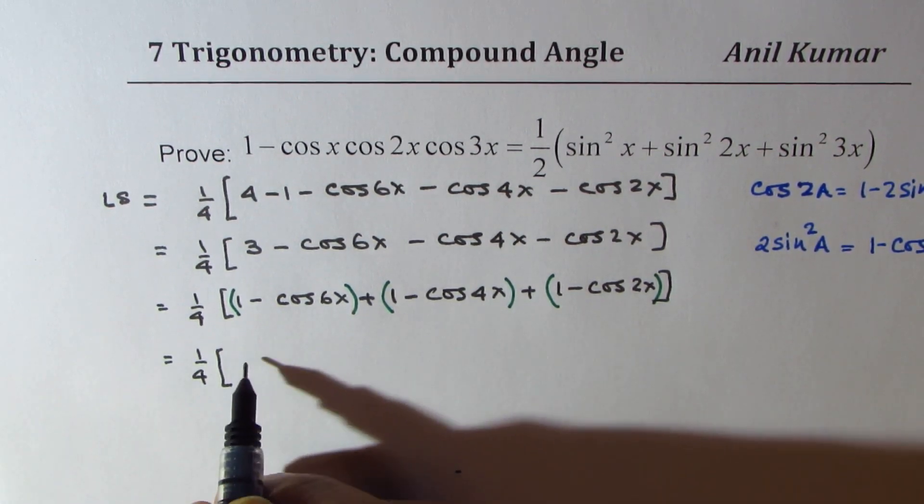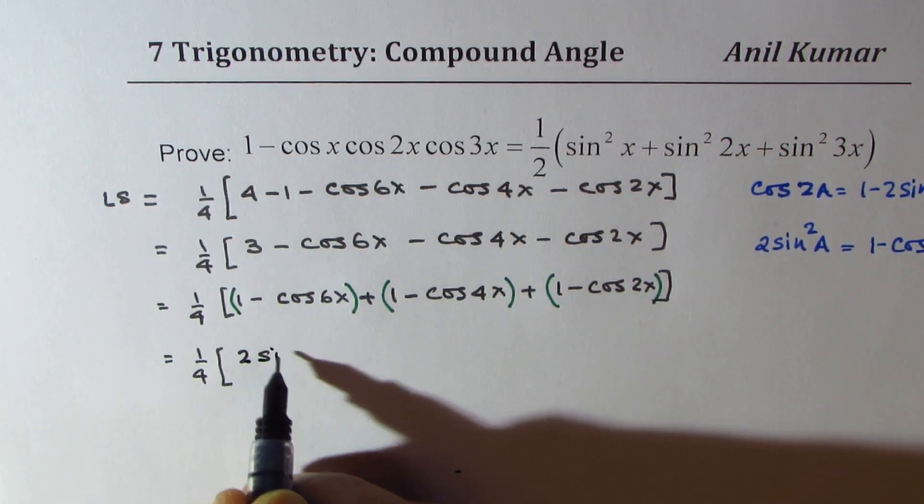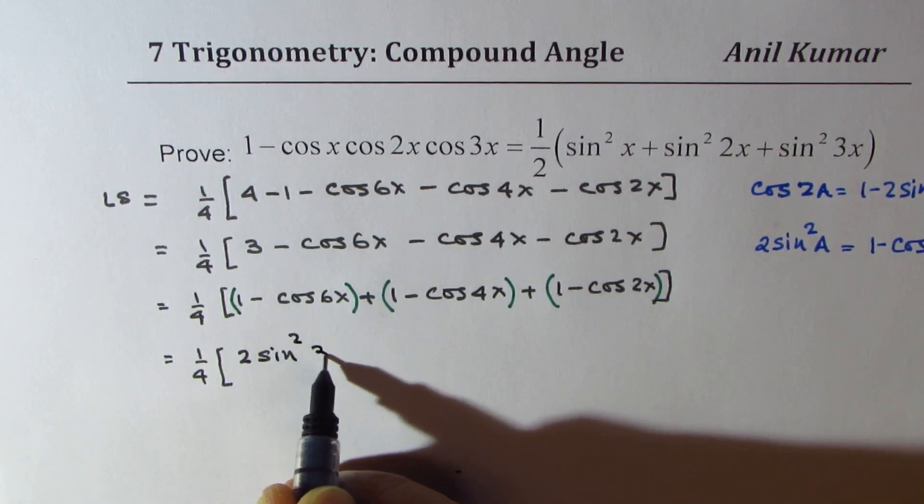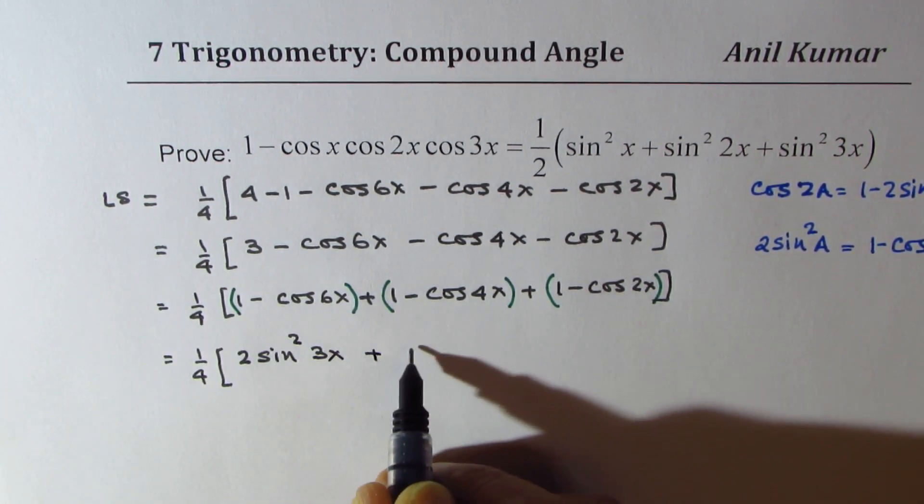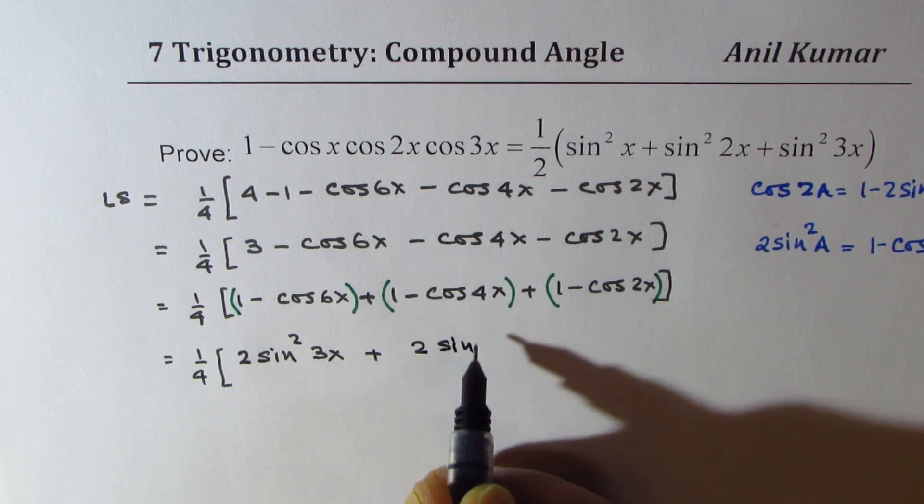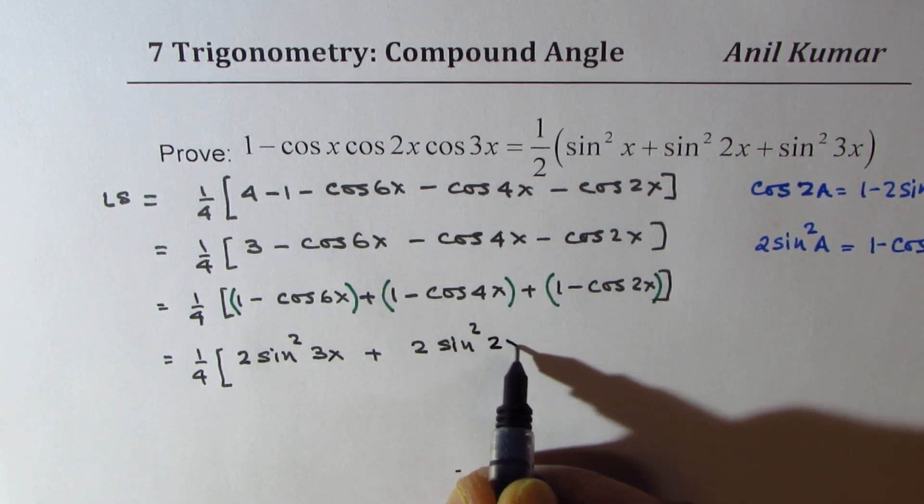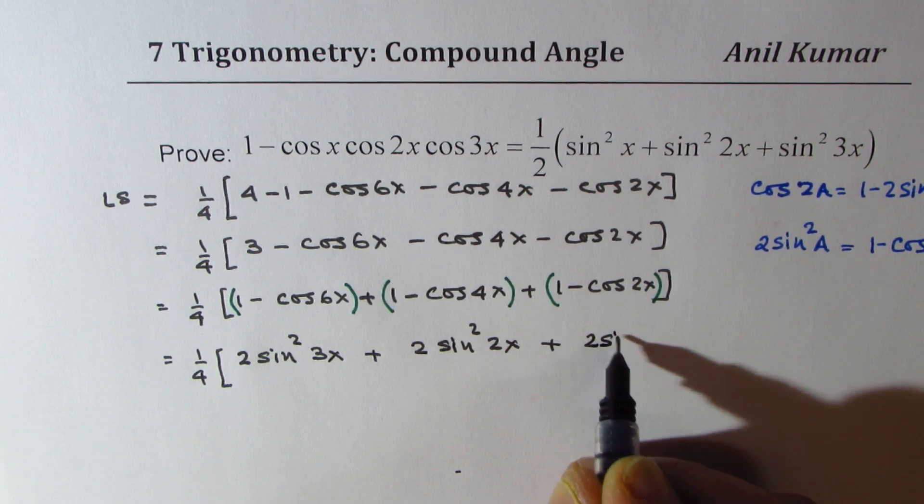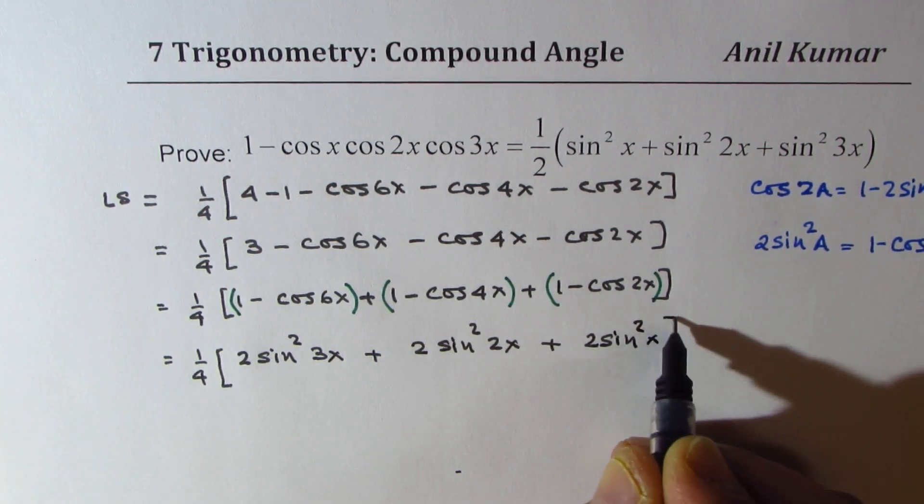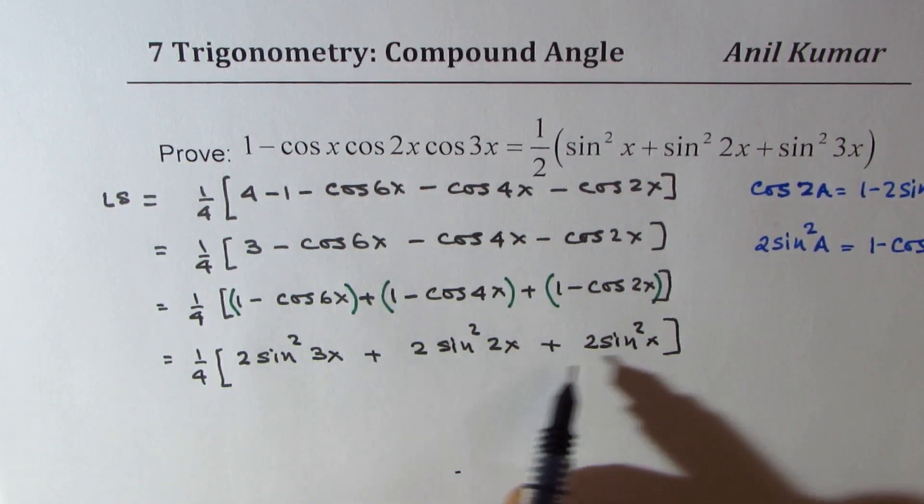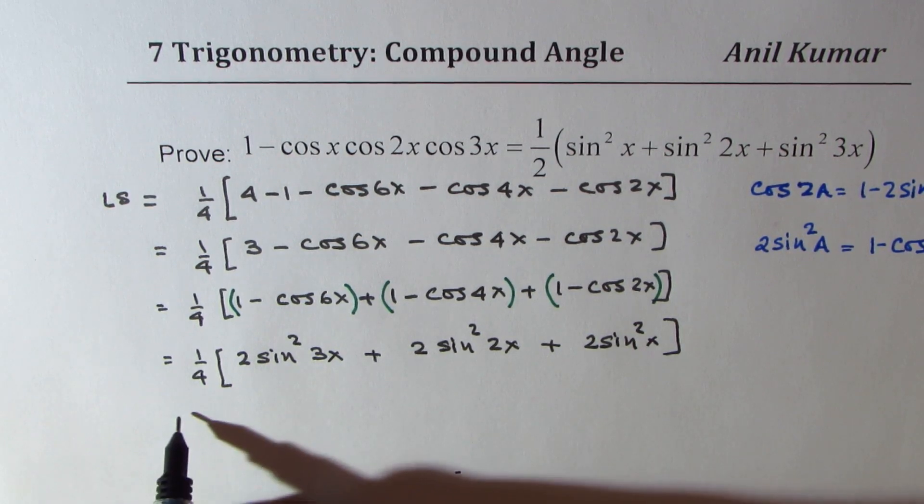So, we get 2 sine square 3x plus we get 2 sine square 2x plus 2 sine square x. Now, we can take 2 common and then simplify this.